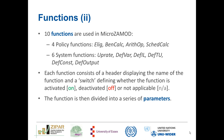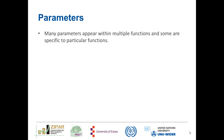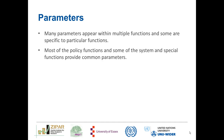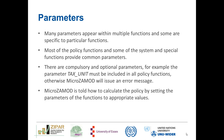The function is then divided into a series of parameters. We can have many parameters appearing within multiple functions, and some parameters being specific to particular functions. There are compulsory and optional parameters. For example, the parameter tax_unit must be included in all of the policy functions; otherwise MicroZamod will issue an error message, because the model won't know who to assign the benefit to or who to assign the liability of the tax. MicroZamod is told how to calculate the policy by setting the parameters of the functions to appropriate values.